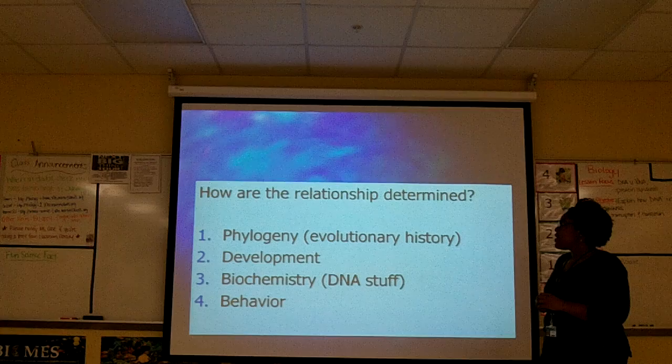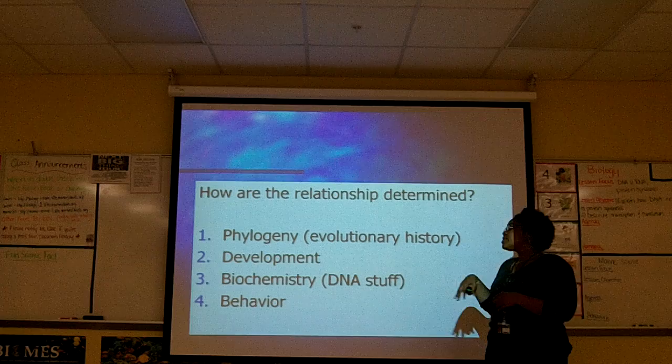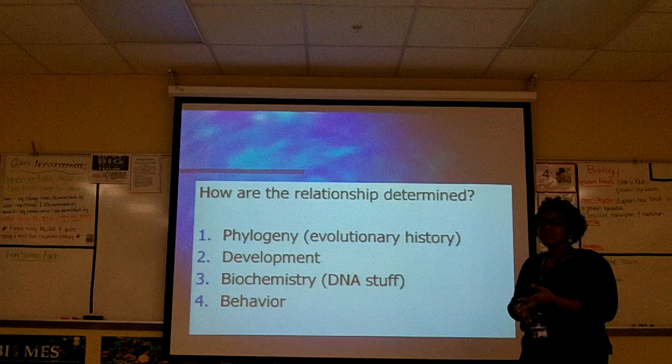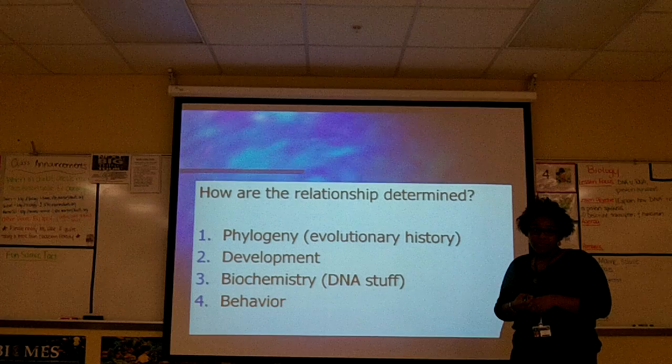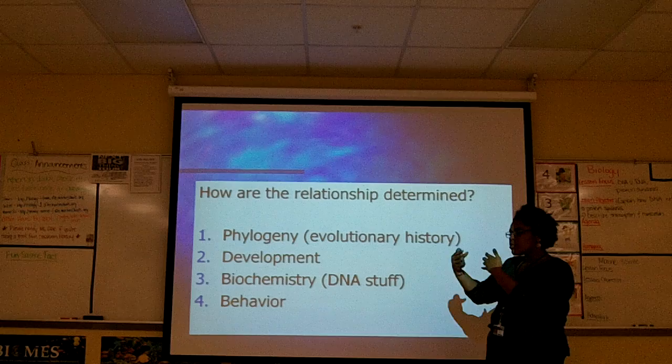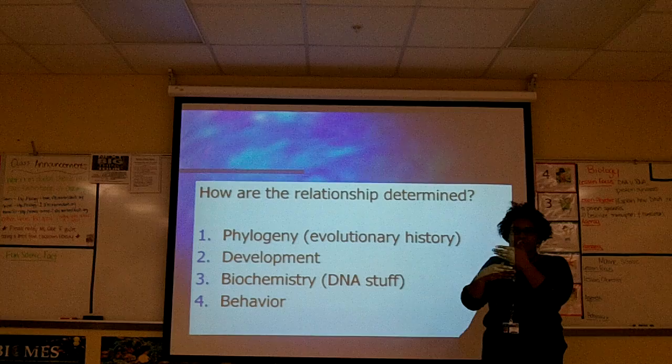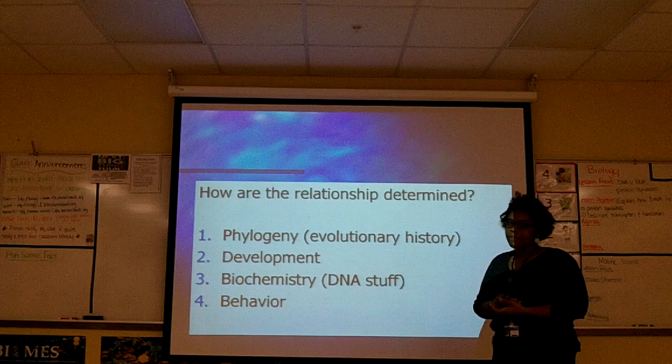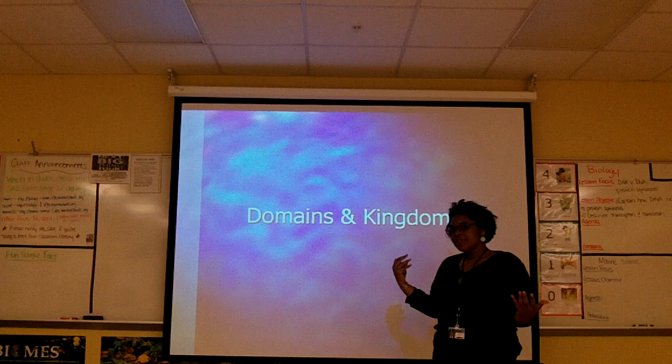How do we determine these relationships when we classify things? A lot of it is phylogeny — the evolutionary history. Sometimes it's development, looking at how organisms develop over time. Biochemistry is also key — all that DNA sequencing we discussed; now that we've decoded the whole human genome, we can use DNA comparisons to determine classification. We also sometimes look at behavior. That's it for today — next time we'll talk about domains and kingdoms. See you next time!